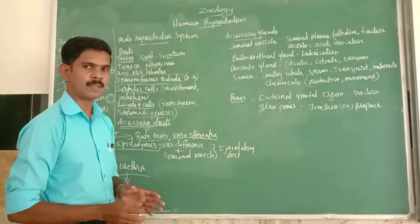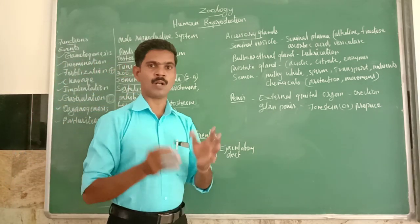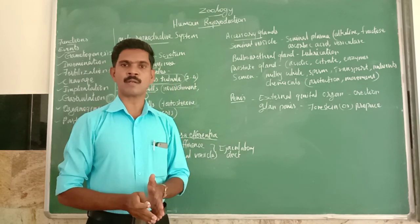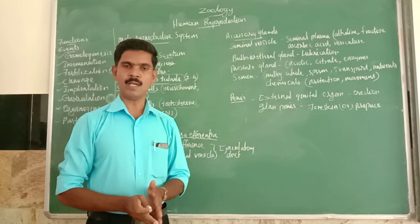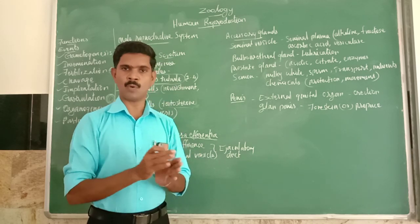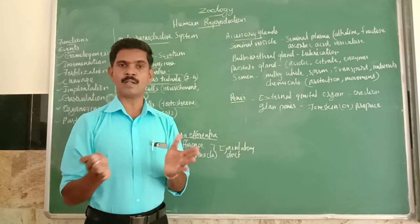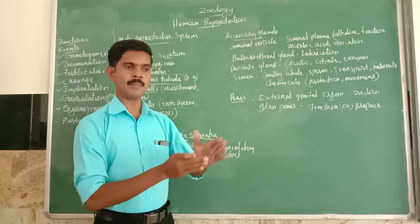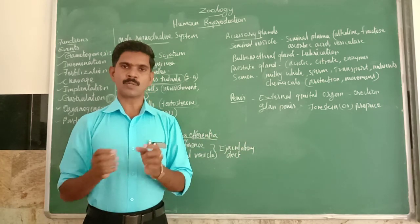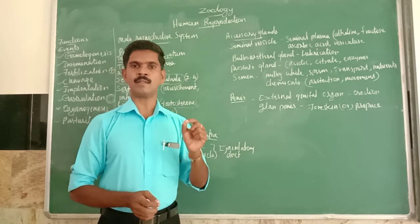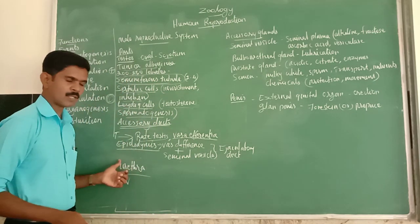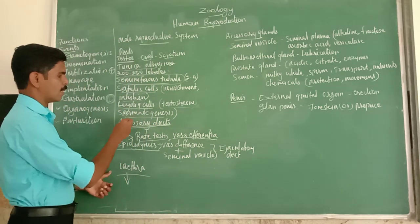The urethra is the last part of the excretory system. Through this urethra, both urine and sperm come outside at different times — not together. Urine comes at one time and sperm at another. This is the structure of the accessory duct system.